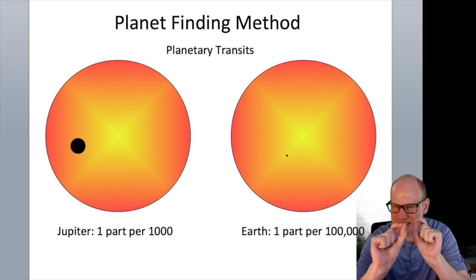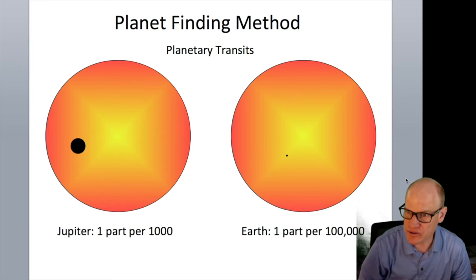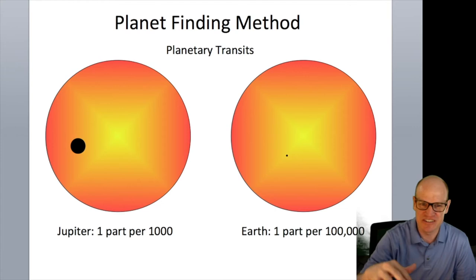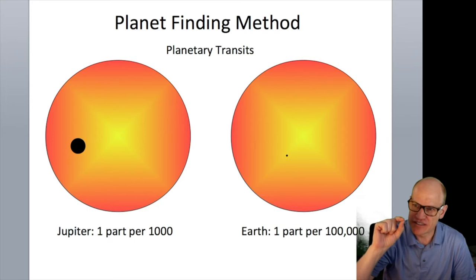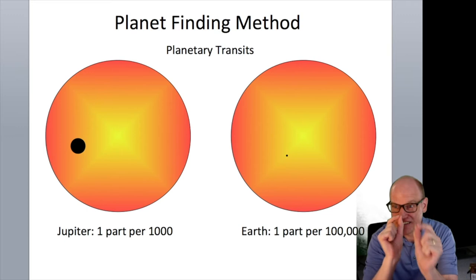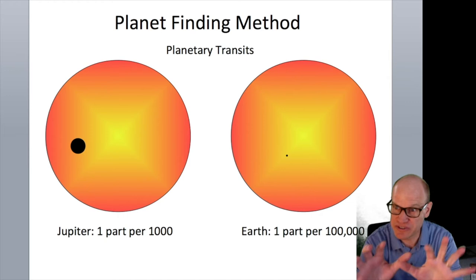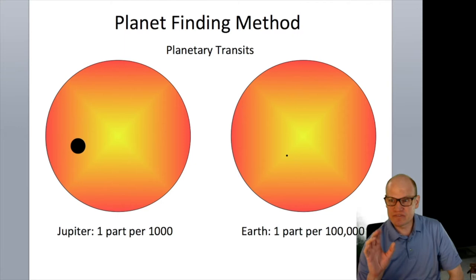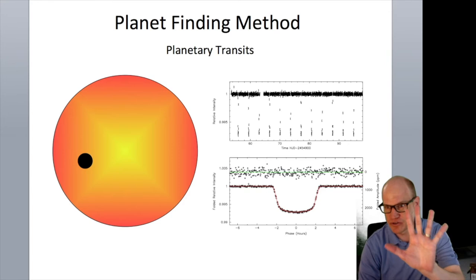With 150,000 target stars, you're looking for 10 parts per million brightness fluctuations. To give an analogy: it's like looking from space down at Chicago and seeing a fly circling a street light — Kepler was detecting the periodic dimming caused by those 'insects' orbiting their stellar 'street lights,' all at once.